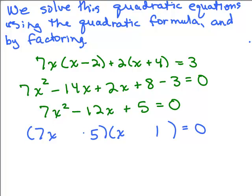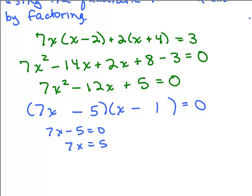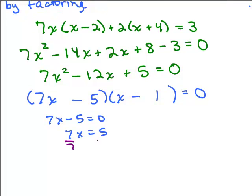If we put 5 in the first factor and 1 in the second, both minus, that's the correct factorization. Multiplying back out gives 7X squared minus 12X plus 5 equals 0. Setting each factor equal to 0 and solving: dividing by 7 gives X equals 5 sevenths, and from the second factor, X minus 1 equals 0 gives X equals 1.